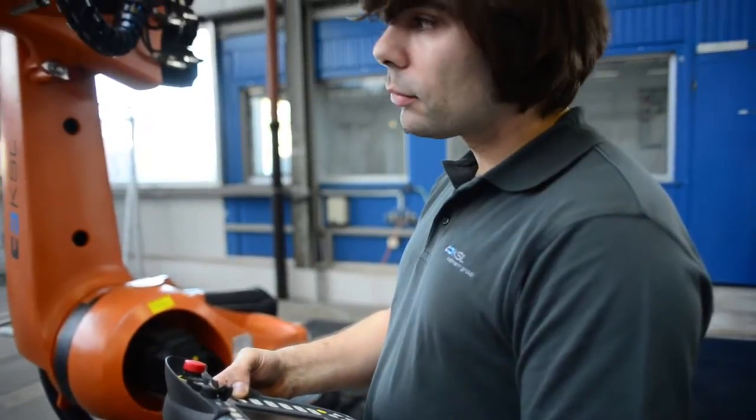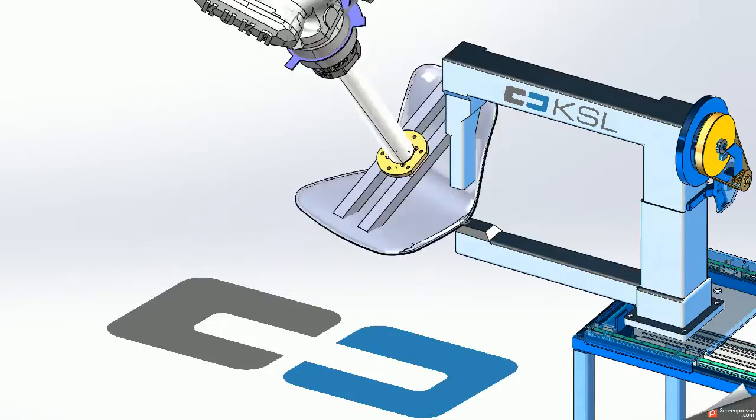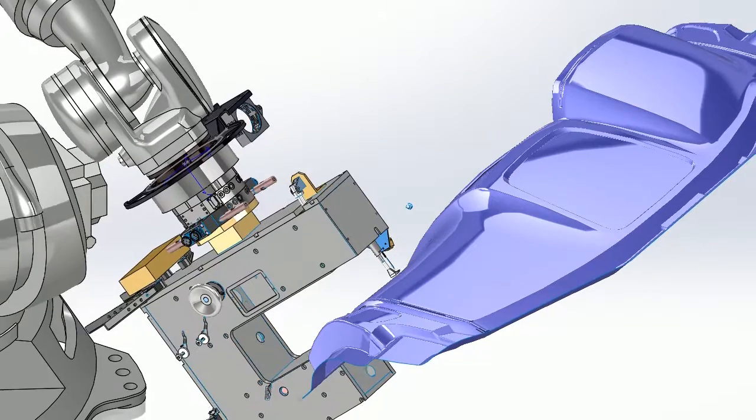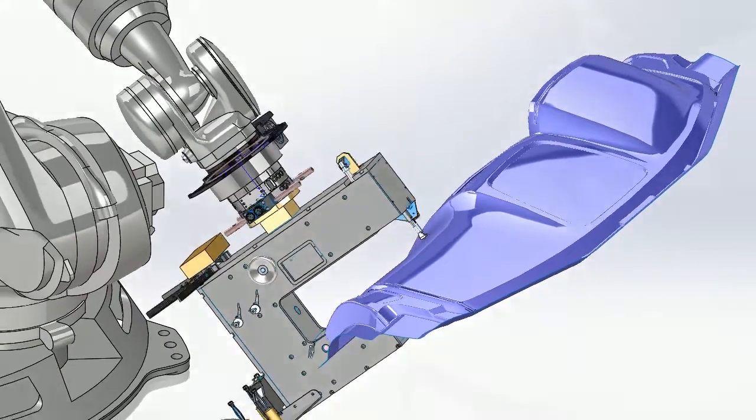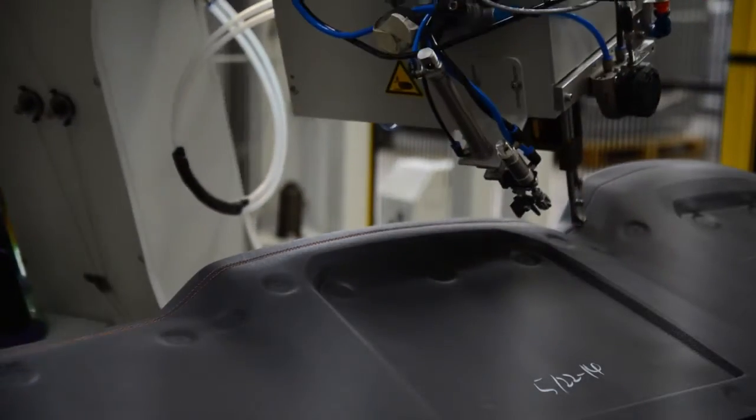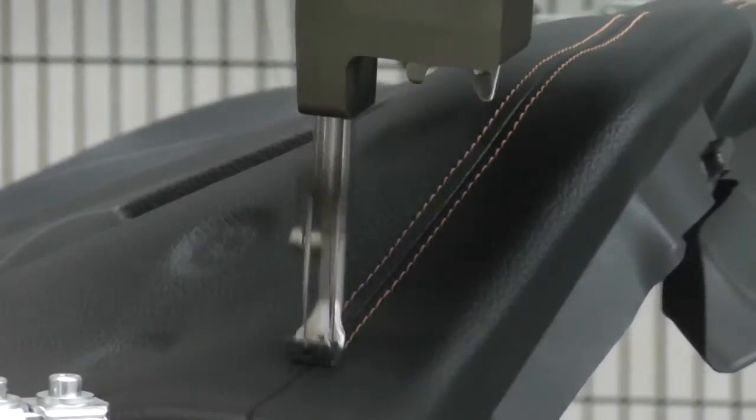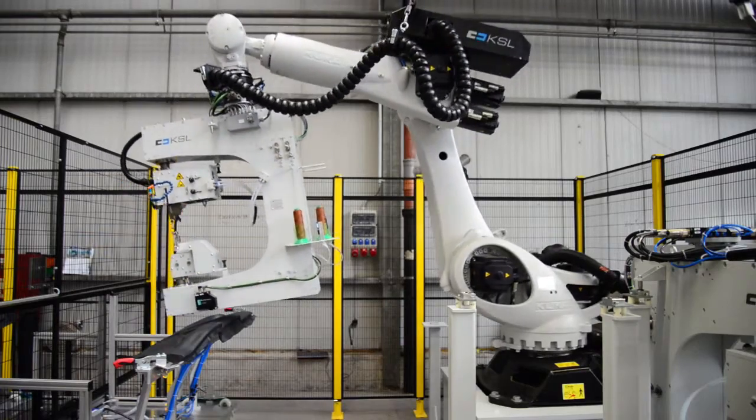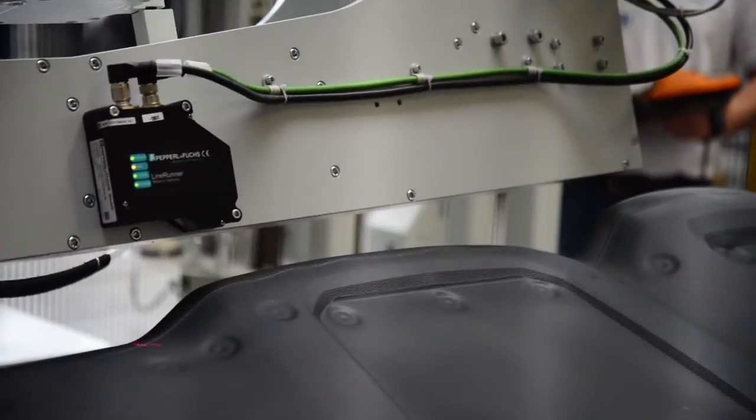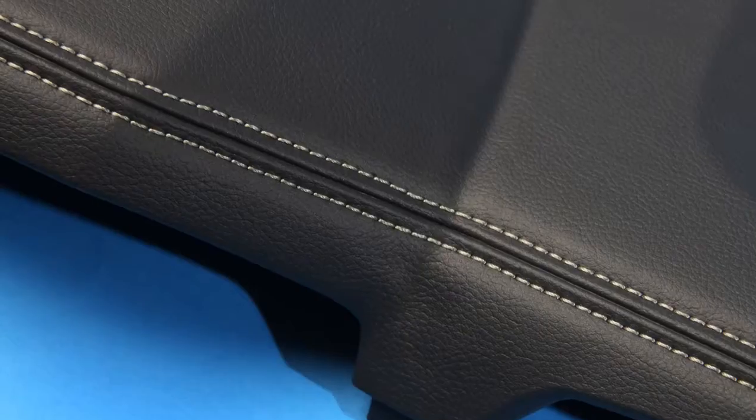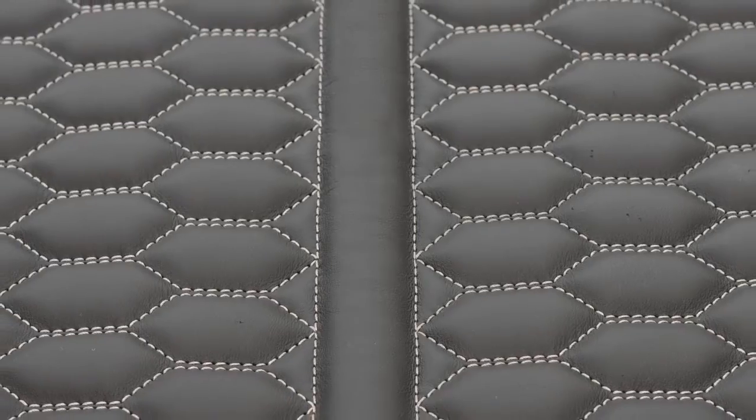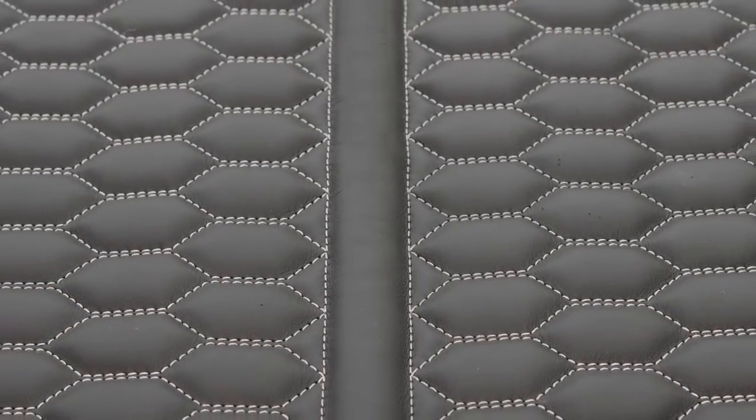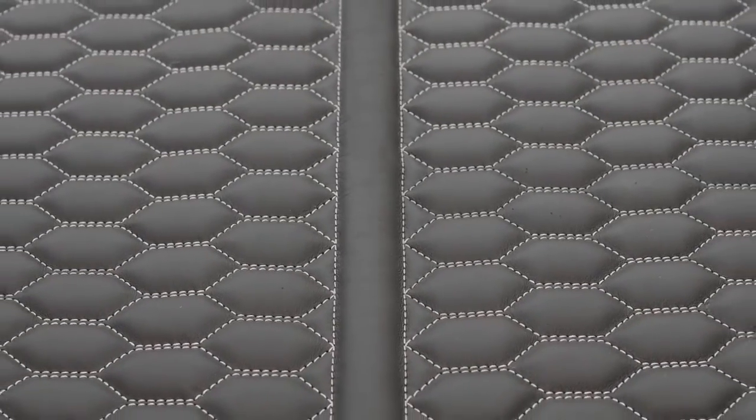Leather, fabrics, carbon, or glass fiber—the automotive industry uses this technology for applications such as car seats or decorative stitching on dashboards, all three-dimensional and automated.